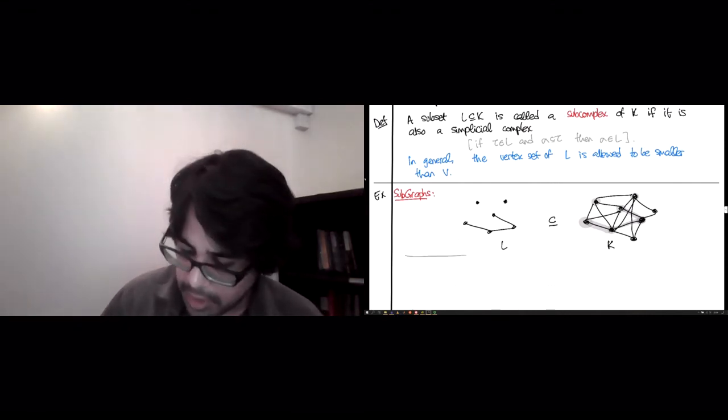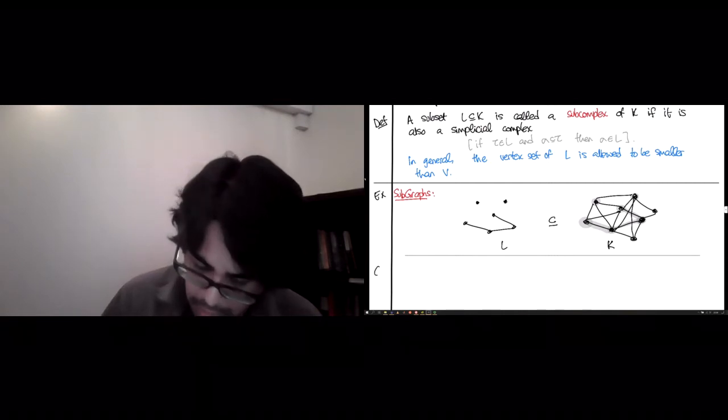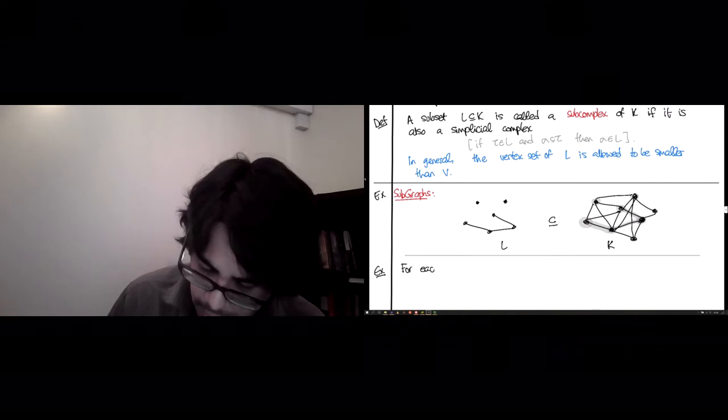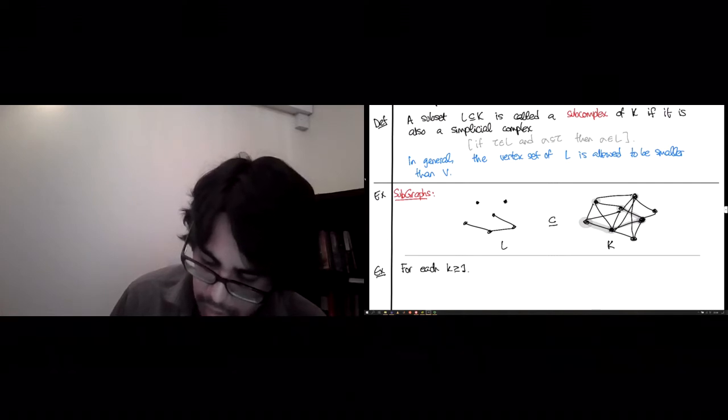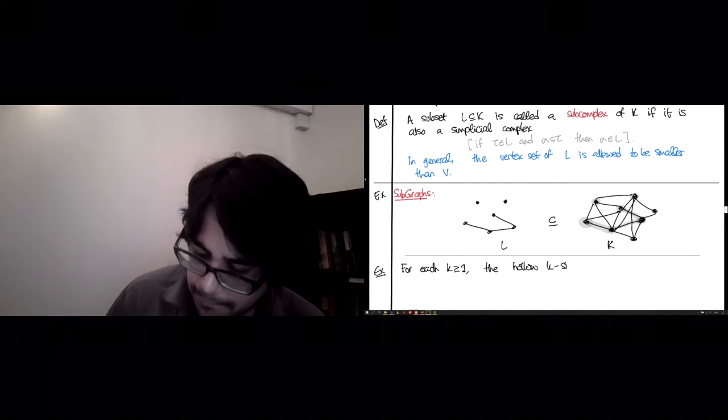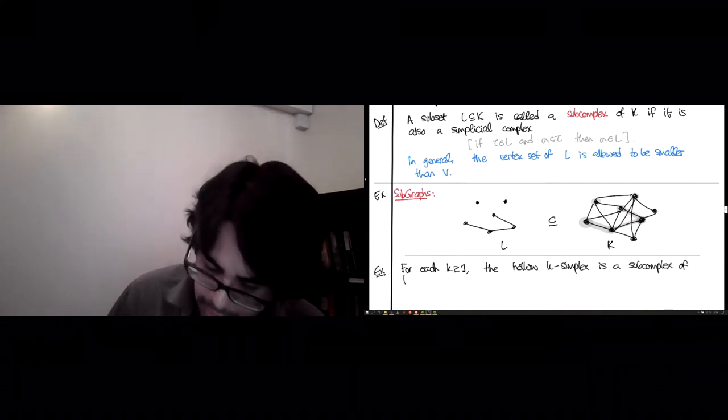Another family of examples comes from looking at solid and hollow simplices. So for each K bigger than 1, the hollow K-simplex is a subcomplex of the solid K-simplex.